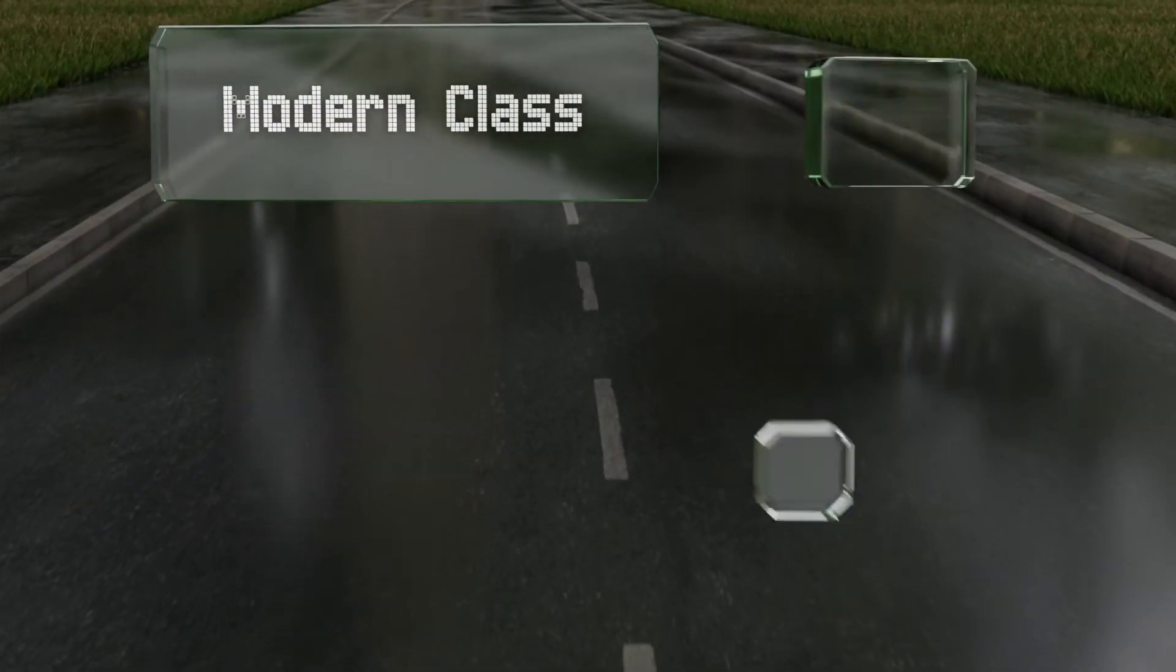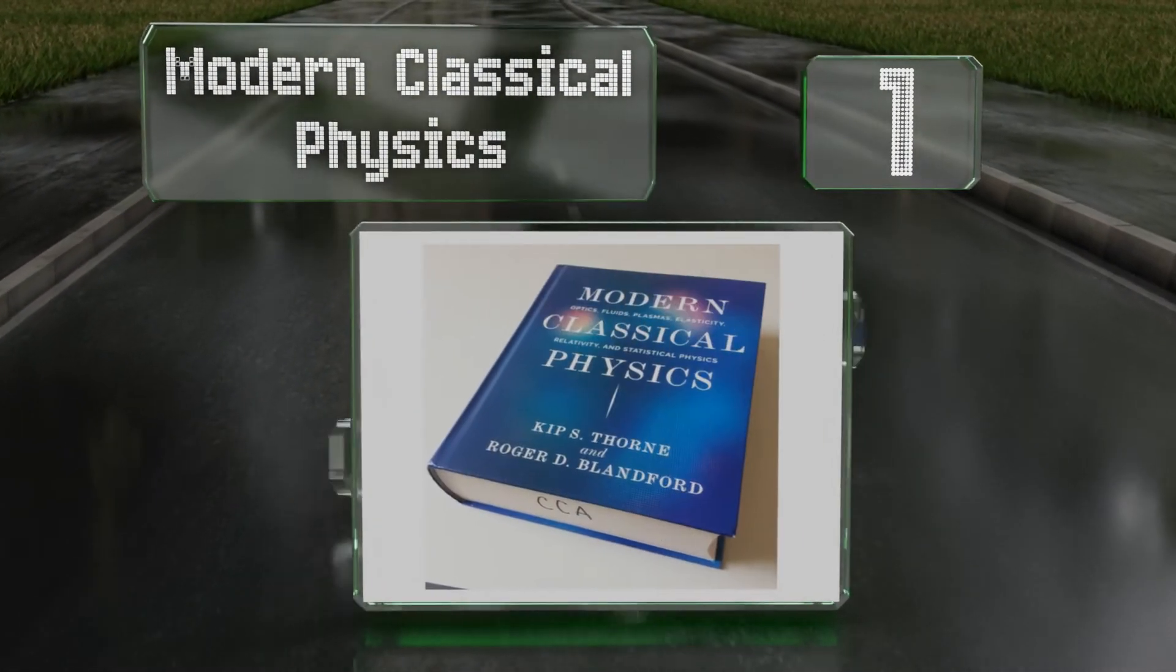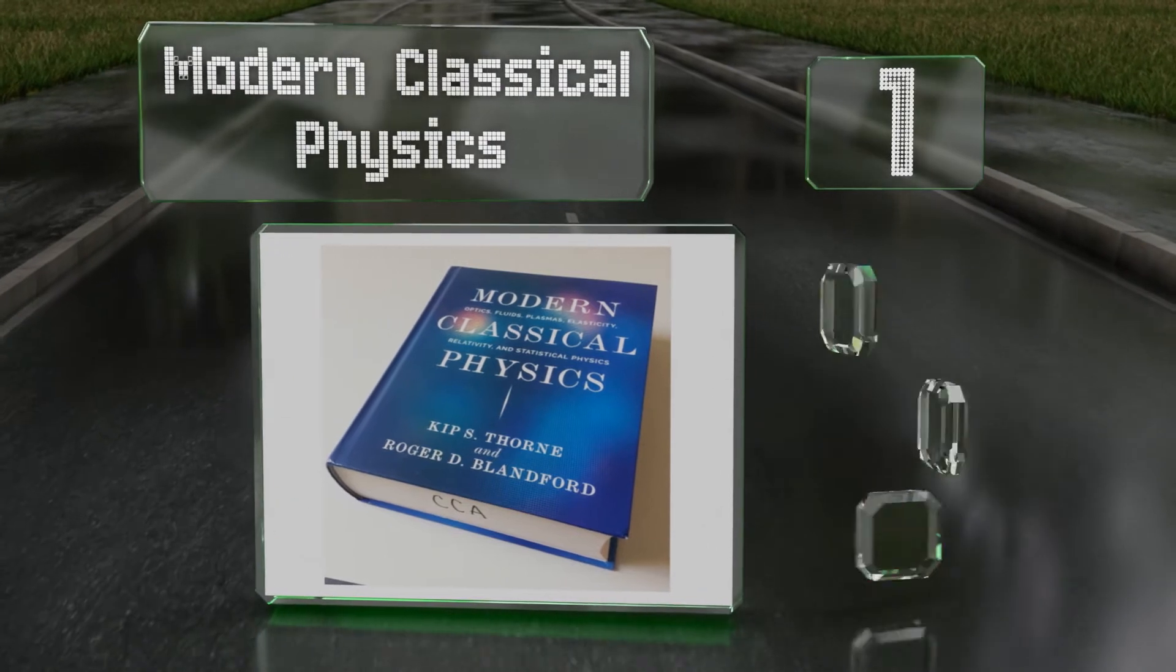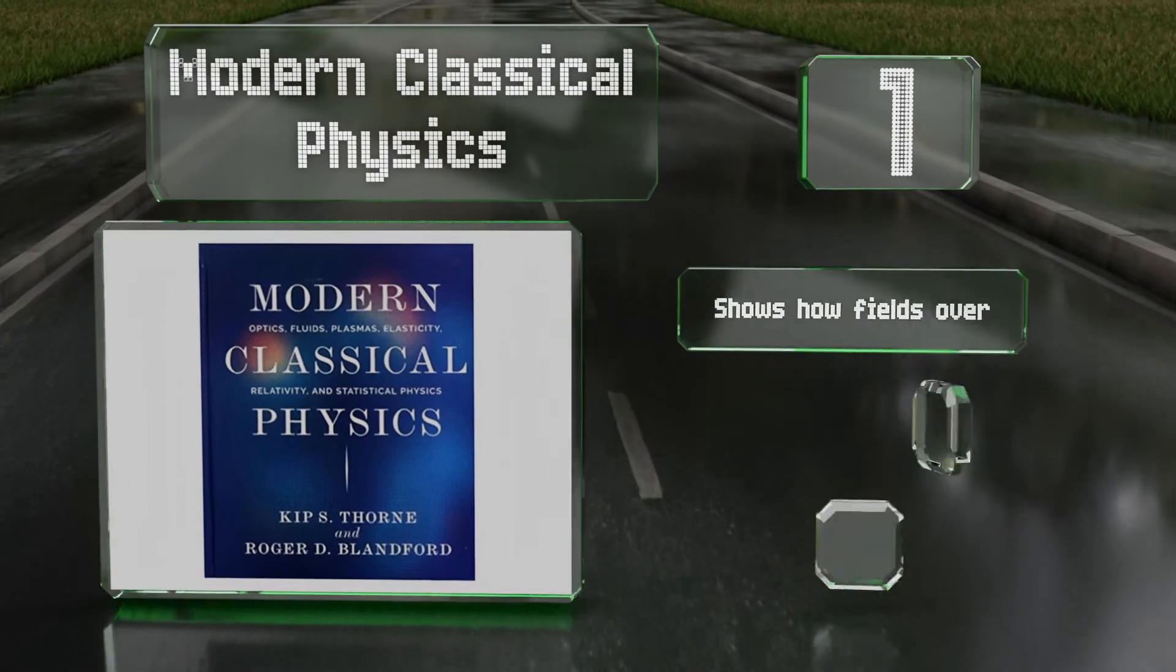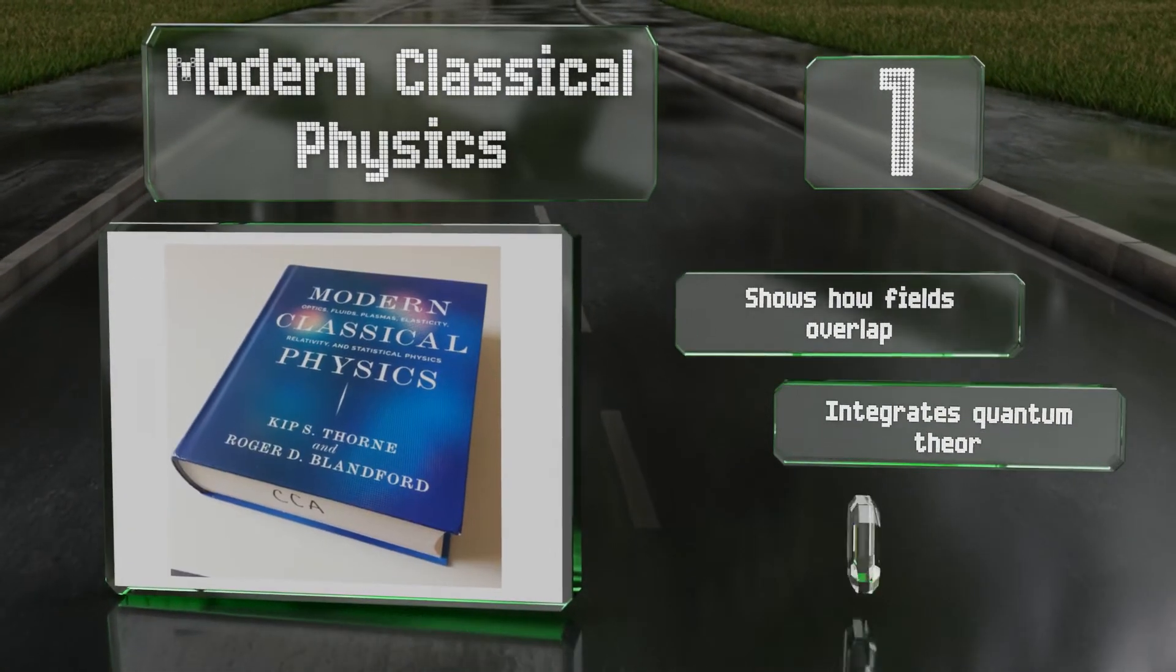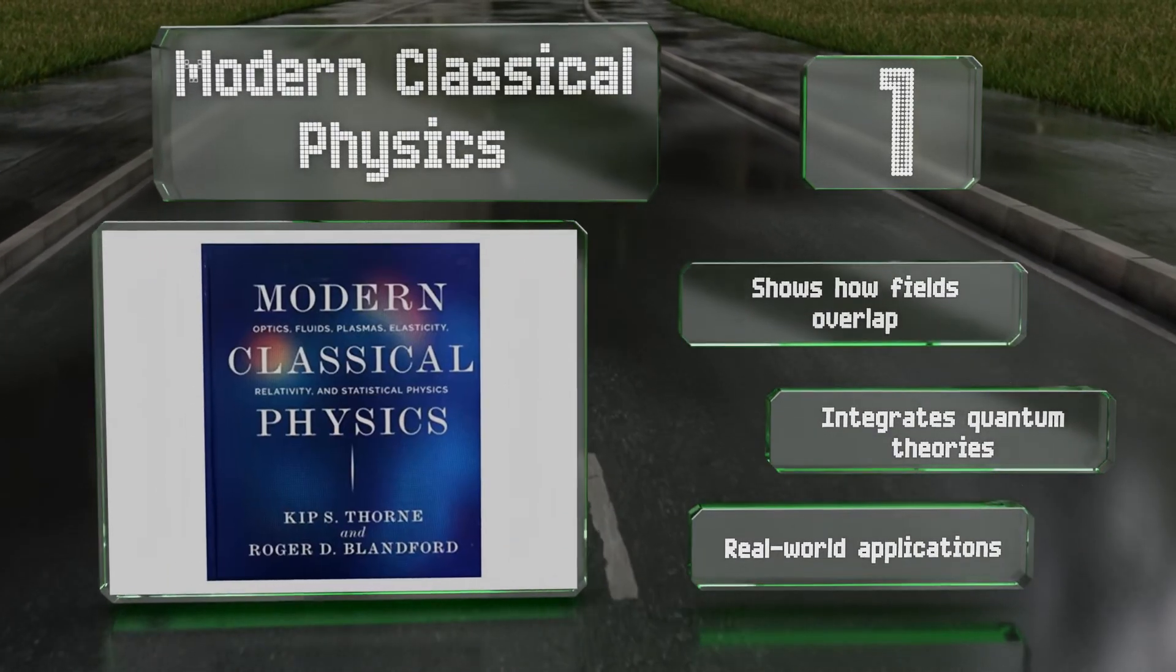And taking the top spot on our list, Modern Classical Physics is conveniently divided into six of the discipline's constituent parts. That makes it a good choice for undergraduates who might need help finding a specialization. It shows how fields overlap and integrates quantum theories. It includes real-world applications.